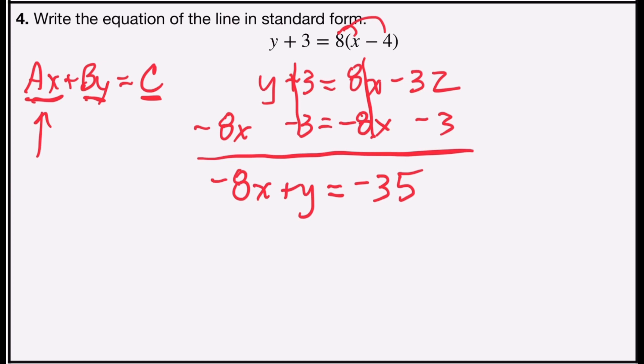So I'm going to multiply both sides by negative 1. Either way, every sign is going to reverse. That would leave me with 8x minus y equals 35, and that's my equation in standard form.